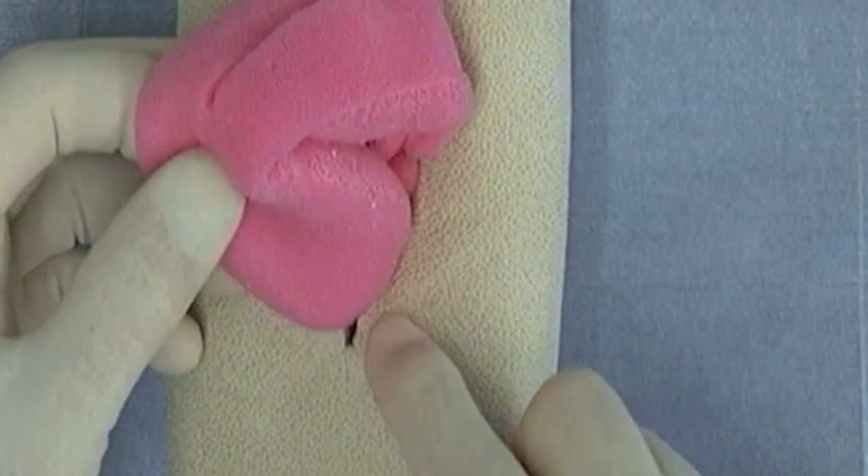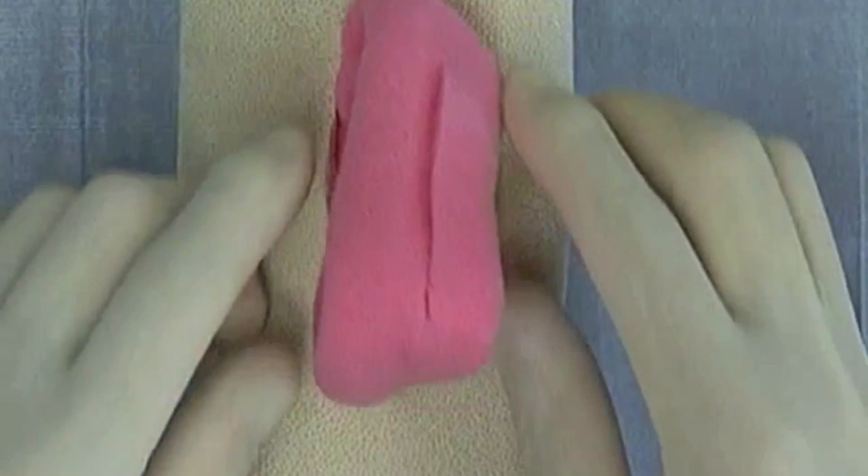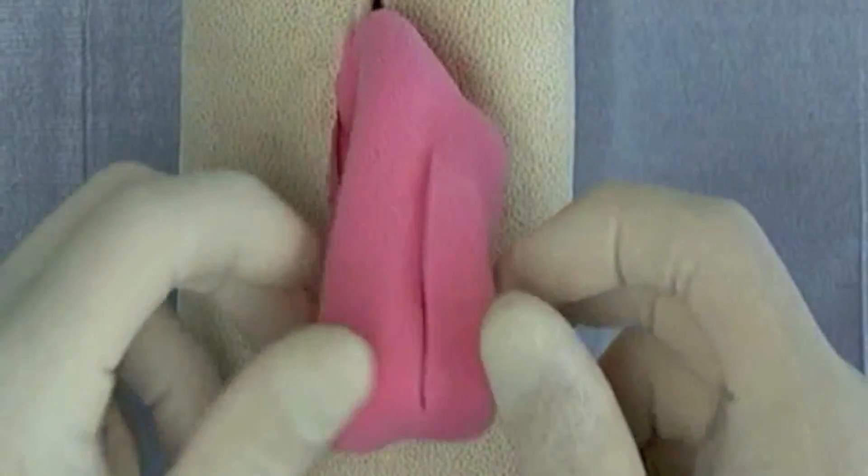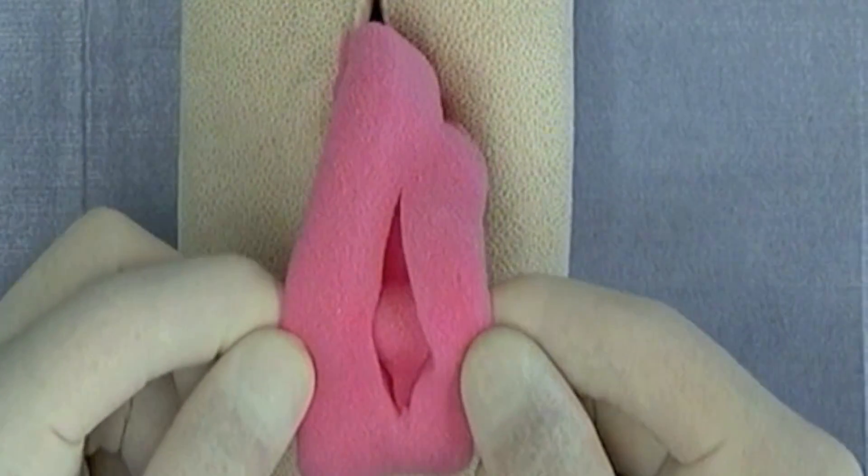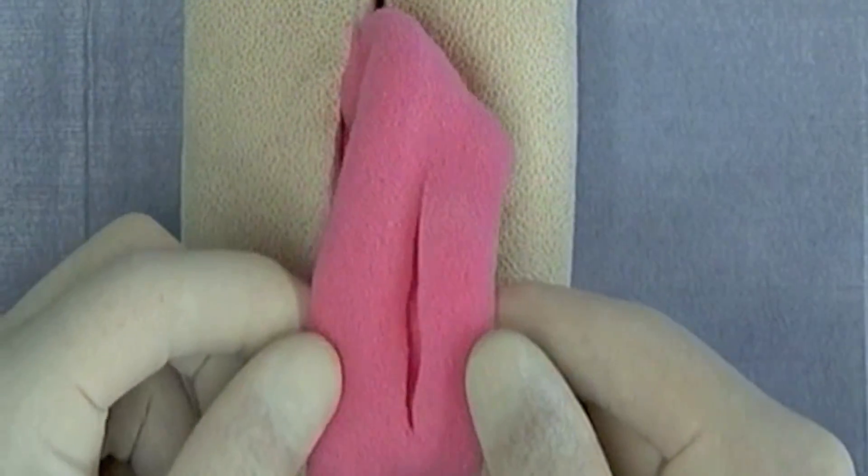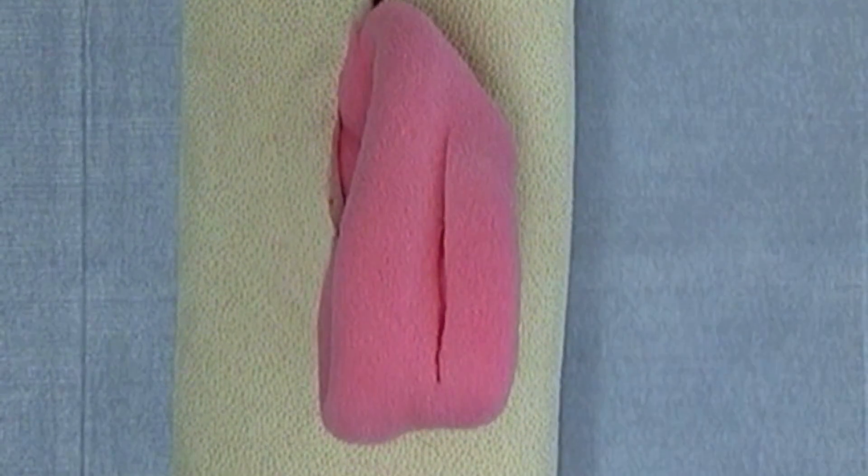While you could practice all of those suture patterns on the skin portion of the daisy, the problem is that you're not going to be able to invert them like you will on the intestinal portion of the daisy. So I would urge you to use that for the suture patterns designed for viscera.